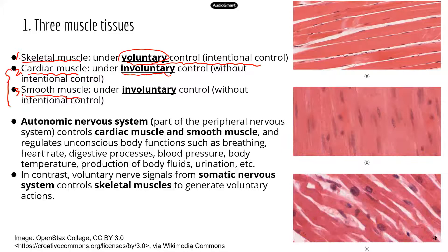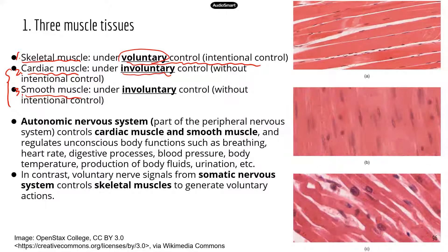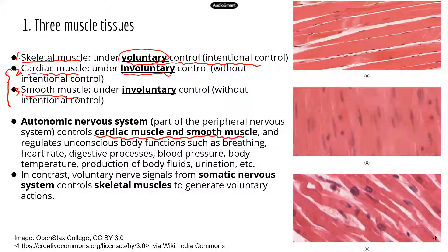The other two types of muscle tissues are under involuntary control. That means you cannot consciously control cardiac muscle or the smooth muscle in your organs or tracts. For example, if you're very nervous and your heart is beating very fast, can you consciously tell your cardiac muscle to not contract this fast? Can you consciously tell your heart to slow down? No, you can't. The cardiac muscle and the smooth muscle are under involuntary control.